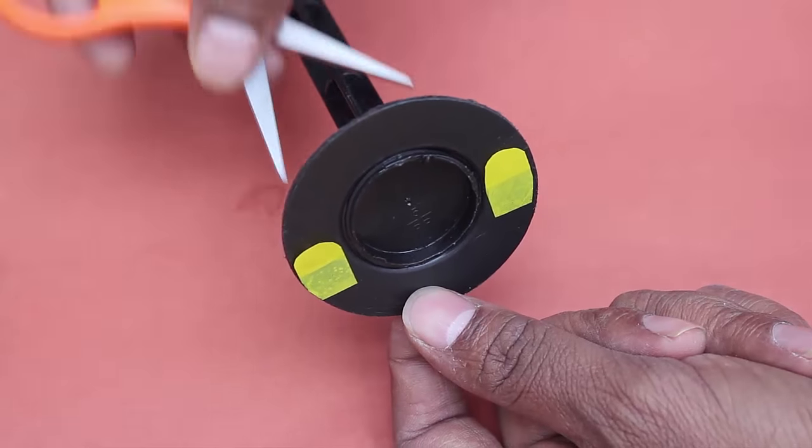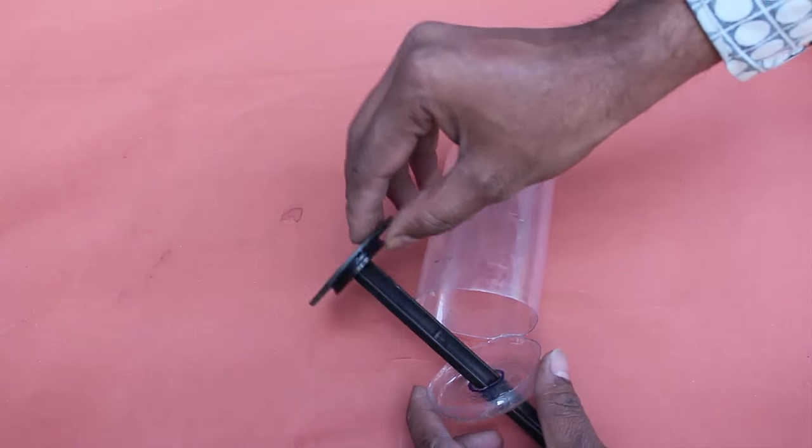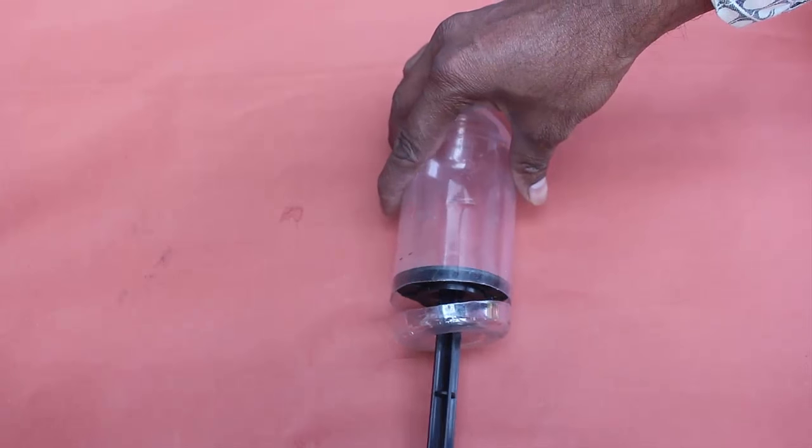Here you can see the flaps. If you push from the other side the flap lifts so they allow air to pass only in one direction.